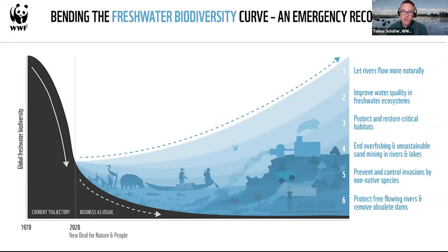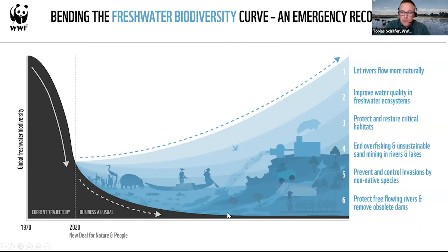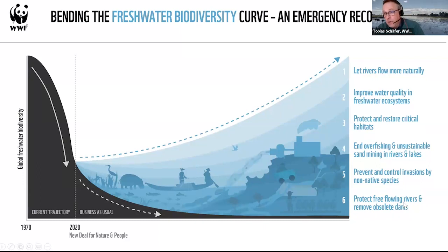Coming from WWF, I have to show this slide. Bending the curve for freshwater biodiversity is something we are working on globally. This is taken from the emergency recovery plan for freshwater biodiversity. Letting rivers flow more naturally, protecting free-flowing rivers, and removing obsolete dams are two of the six key challenges globally and of course also in Europe.